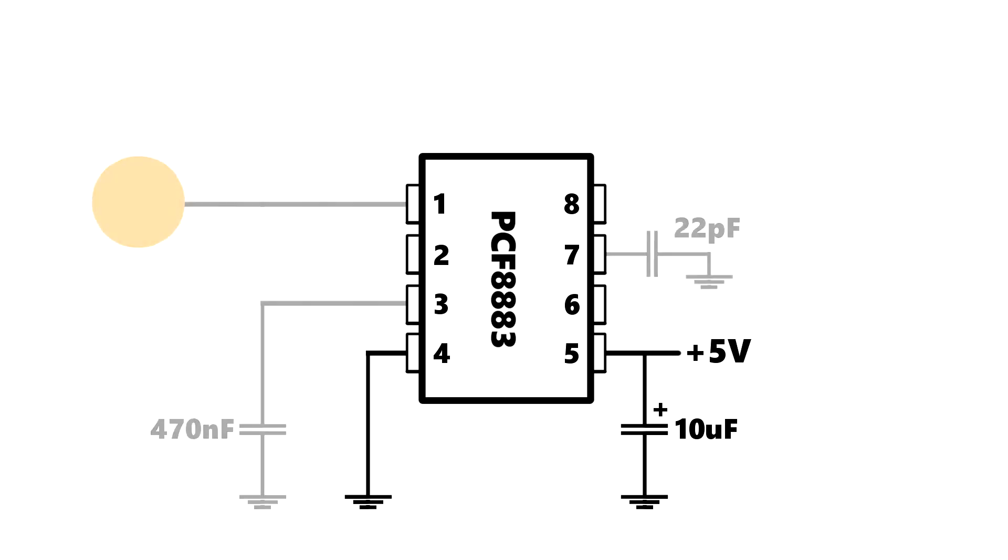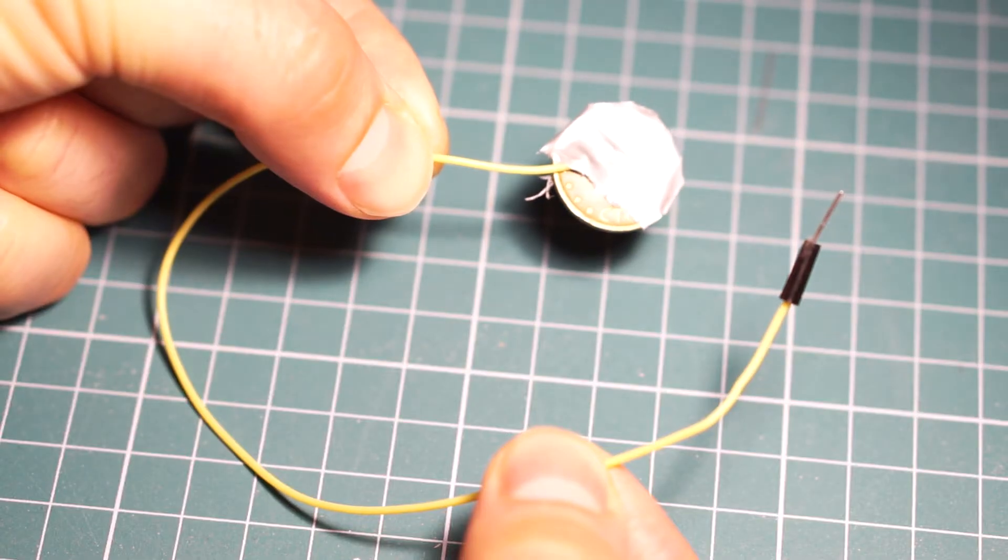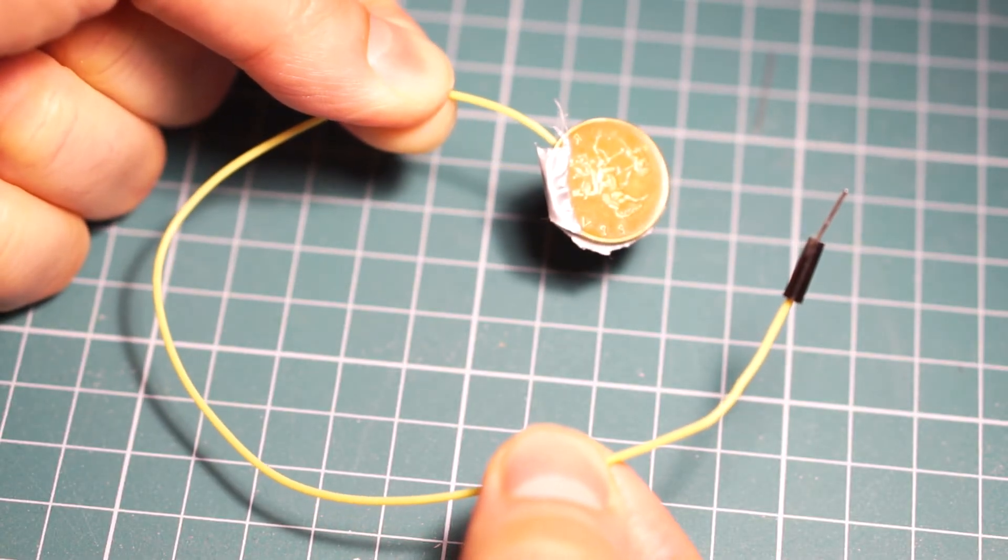Now let's look at the schematic. The PCF8883 has 8 pins. Pin 5 is your power supply. Pin 4 is connected to ground. Pin 1 is your touch-sensitive input. I simply have a piece of wire that is stuck to the penny with a piece of tape.